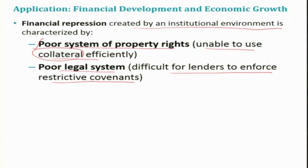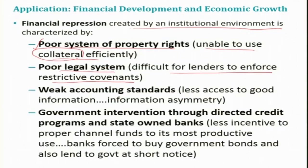These issues are more prevalent in developing countries. Then there are weak accounting standards. In order to make information clear and transparent, independent auditors and accountants are appointed. However, accounting practices in most developing countries are often weak, leading to less access to information about borrowing firms and firms issuing IPOs. This leads to information asymmetry, which hampers the efficient working of the financial market.